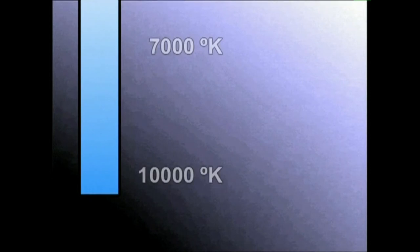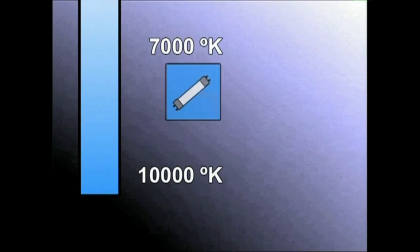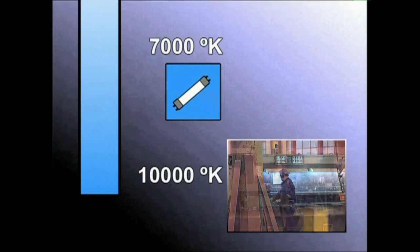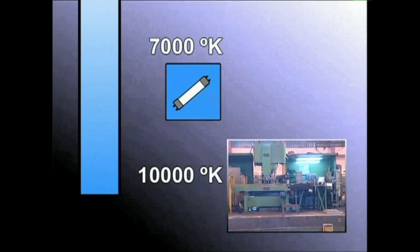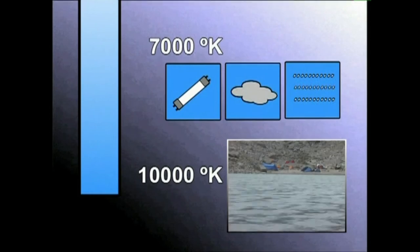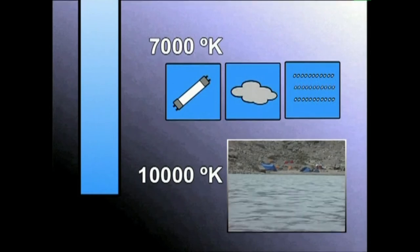Azken tokian dago argi urdina, 6.000 eta 8.000 gradu kelvinen artean dabilena. Argi iturri artifizial artean, bakarrik lampara fluorezente berezi batzuek lortzen dute halako kolore temperatura. Argi iturri naturala egun lainotsuen eta euritsuetan iristen da kolore urdinaren kolore temperaturara.